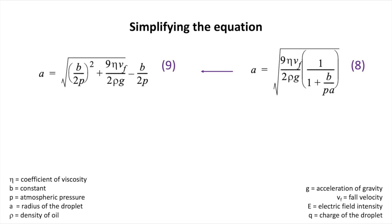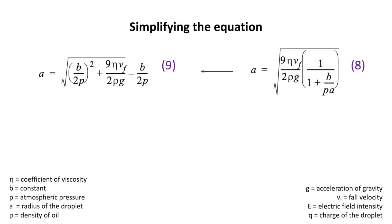We can then manipulate equation 8 to remove the term a from inside the square root, obtaining equation 9. Now we can come back to equation 5, finally. We are almost there, believe me.